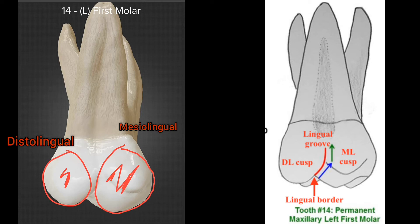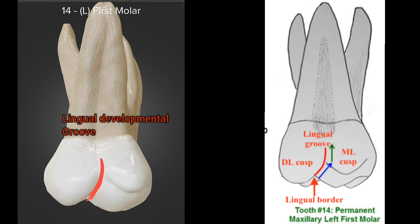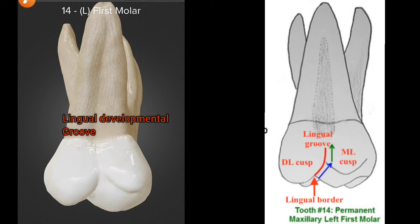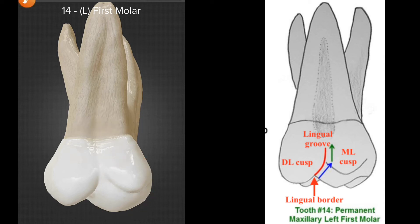The mesial outline of the crown and the mesial slope of the mesiolingual cusp together form almost 90 degrees. Both palatal cusps are separated by the lingual developmental groove. A fifth cusp is also present here — called the tubercle of Carabelli — located at the mesiolingual cusp. All three roots are visible from this aspect as well.